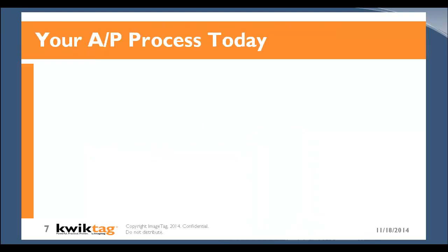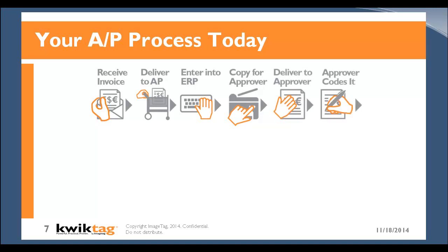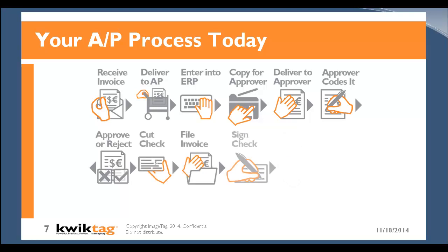I'm going to show you a graphic that illustrates the typical steps in an accounts payable process today. Anywhere you see a hand in orange represents a manual step where there's the risk or possibility of error or inefficiencies that can be eliminated. The receipt and handling of invoices today — whether paper or electronic — getting those to accounts payable, the data entry involved to get that information into the ERP system. Those documents are typically copied, routed to approvers, who code them by writing information on them or putting it in an email and sending it back. Then there's a payment process — a check is cut, the invoice is filed away separate and disparate from the ERP system, and a check is mailed.